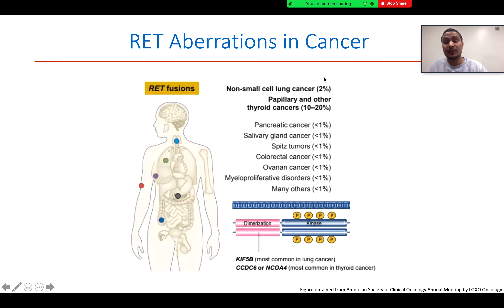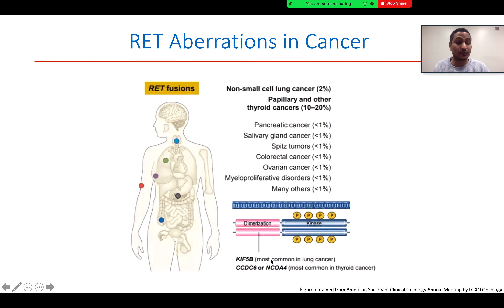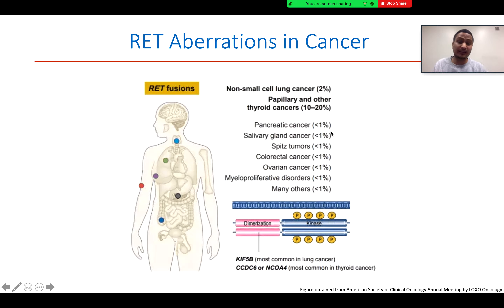Another common alteration is RET fusion with different fusion partners. Almost 2% of non-small cell lung cancer cases harbor a RET fusion, where KIF5B-RET fusion is the most common. About 10 to 20% of fusions have been found in papillary and other thyroid carcinomas, where we find CCDC6-RET or NCOA4-RET fusions. RET fusions are also seen in multiple other cancer types, but it is very rare — less than 1% in all those different cancer types.